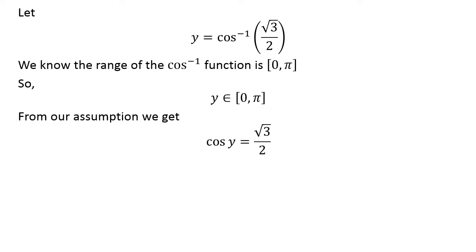Applying properties of inverse functions, we can rewrite y equals inverse cosine of square root of 3 upon 2 as cosine of y equals square root of 3 upon 2.